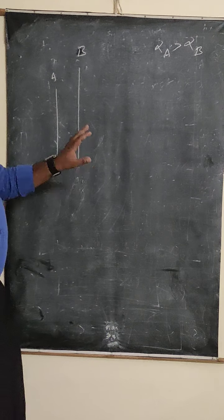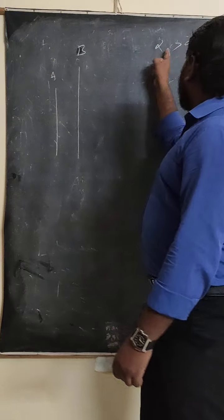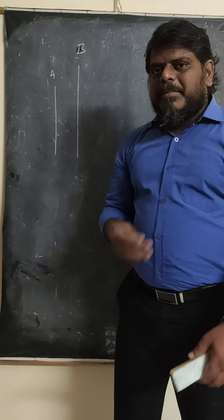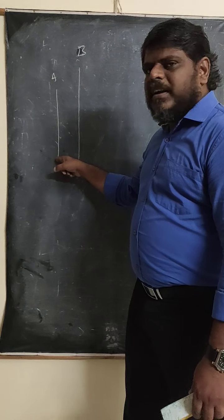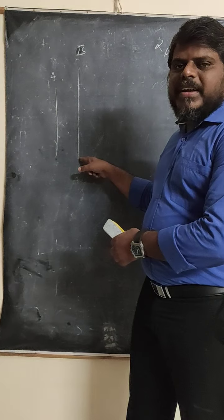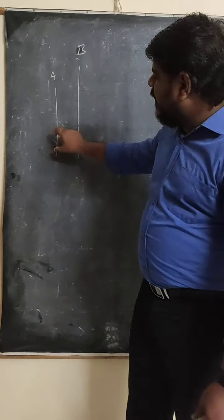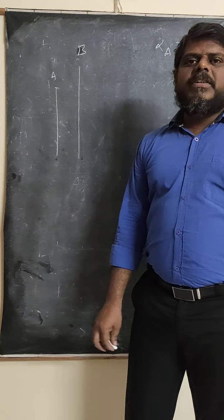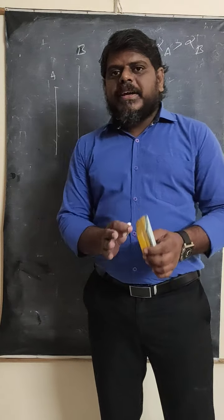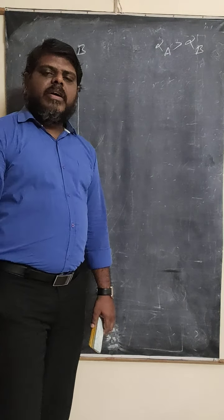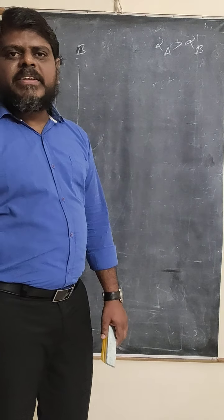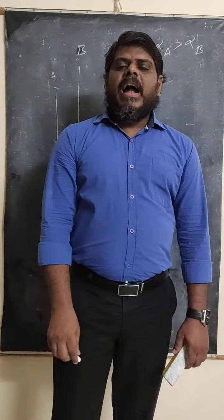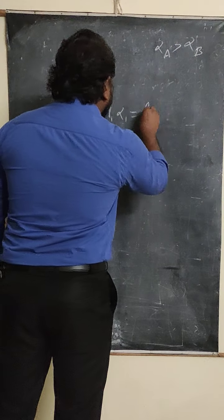Both metal rods are made of different materials, so their alpha values are not the same. Alpha of A is maximum and alpha of B is minimum. If you give the same amount of heat energy — say, increase temperature by 50 degrees Celsius — both do not expand equally. One expands more and the other expands less, so the difference between the two rods will not be constant. But if you want to keep the difference constant at whatever temperature — 20, 40, 100, or 500 degrees Celsius — then a condition must be satisfied: L1·alpha1 equals L2·alpha2.